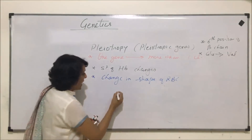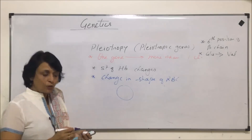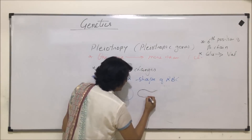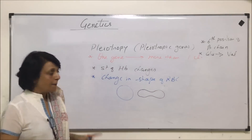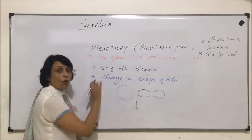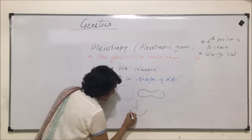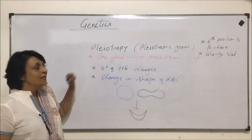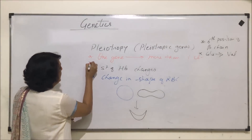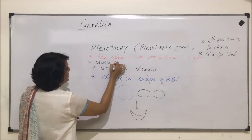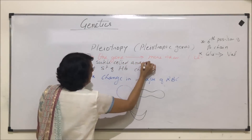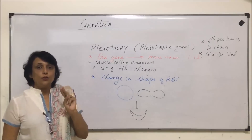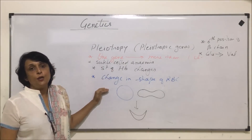Normal RBCs are flat when seen from the top, and biconcave when viewed from the side, as they are enucleate. But because of this disorder, the shape of RBC becomes sickle-like — and so the name of this disease is sickle cell anemia. So, one gene is responsible for controlling two things: the structure of hemoglobin and the shape of RBC.